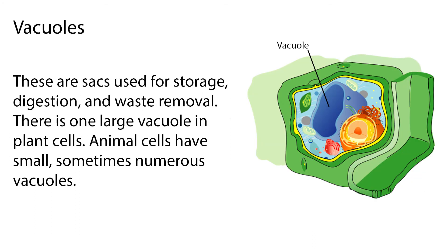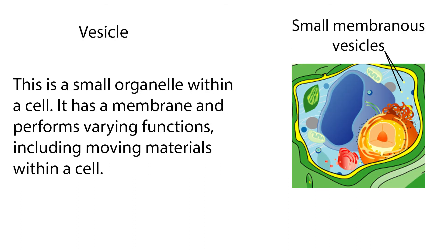Vacuoles are sacs used for storage, digestion, and waste removal. There is one large vacuole in plant cells. Animal cells have small, sometimes numerous vacuoles. A vesicle is a small organelle within a cell. It has a membrane and performs varying functions, including moving materials within a cell.